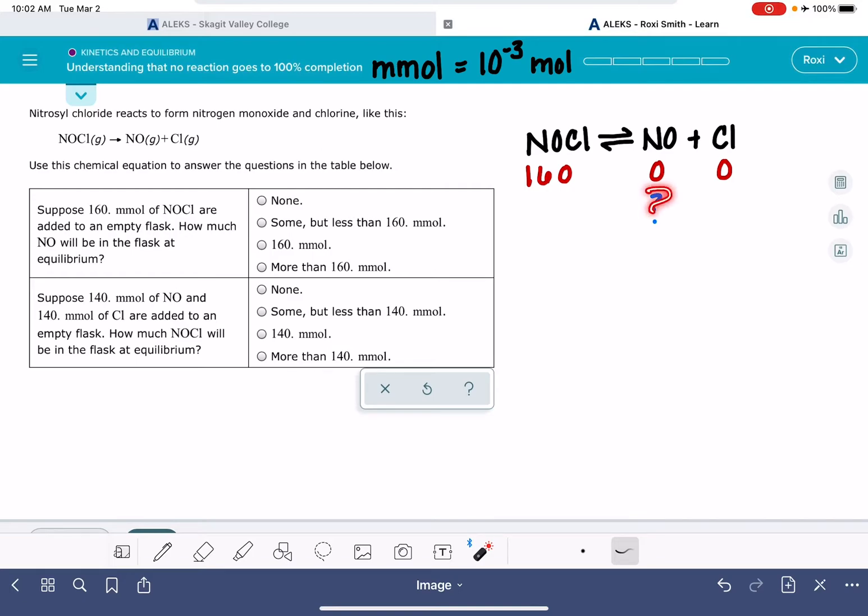So I know that I'm going to have some amount of NO, in which case it doesn't make sense to say none. We'll just cross that answer out. Because again, some of this NOCL will react. There will be some amount over here that will be more than zero. And that's also the case for the CL, even though it's not asking us about that. But not all of the 160 millimoles will react. Some of it will be left over.